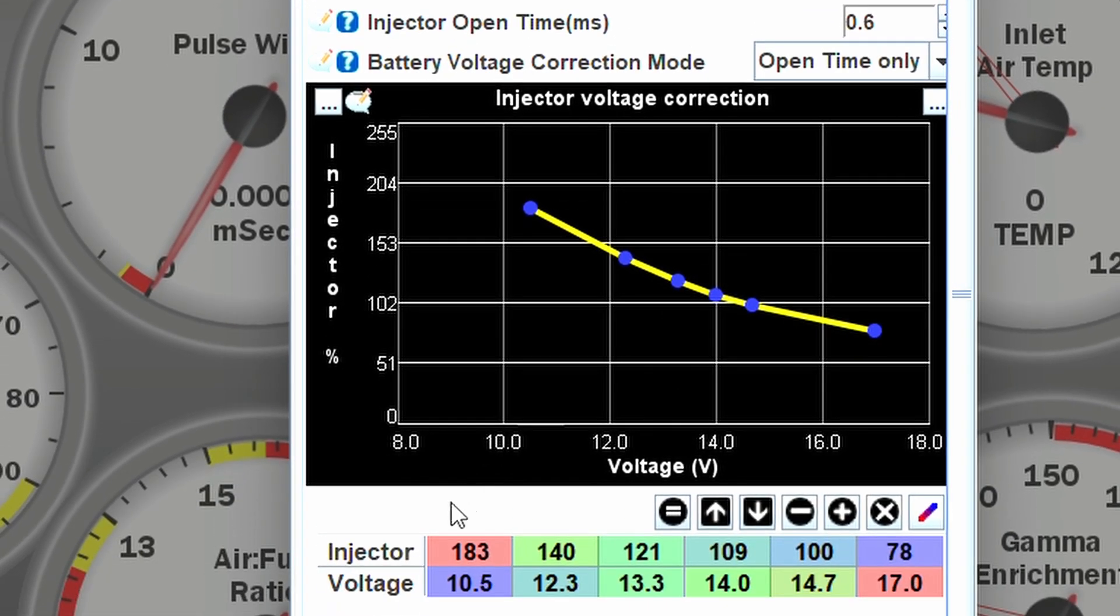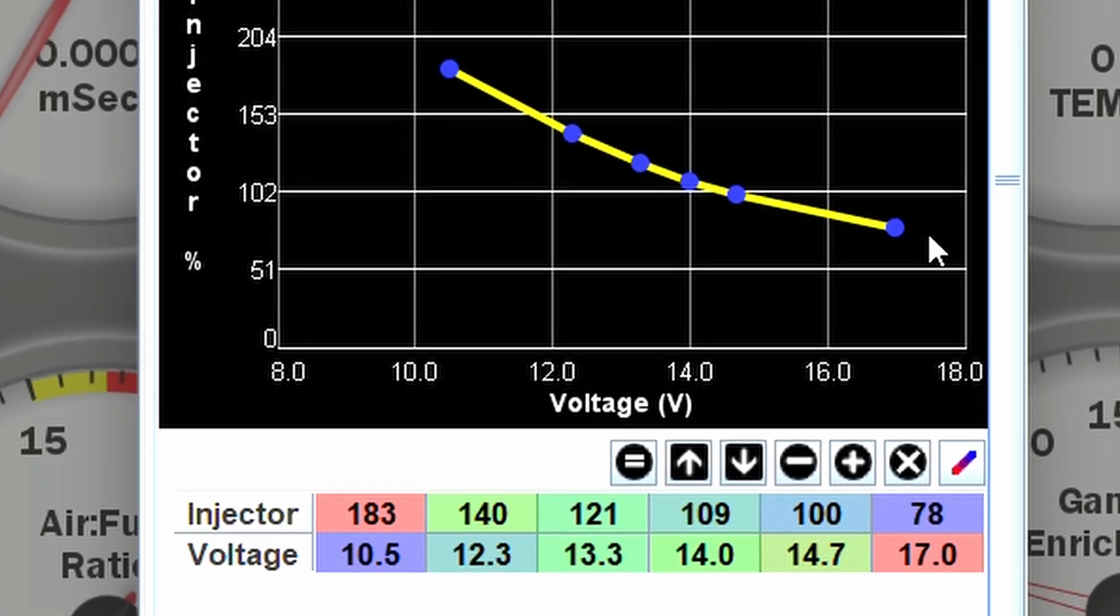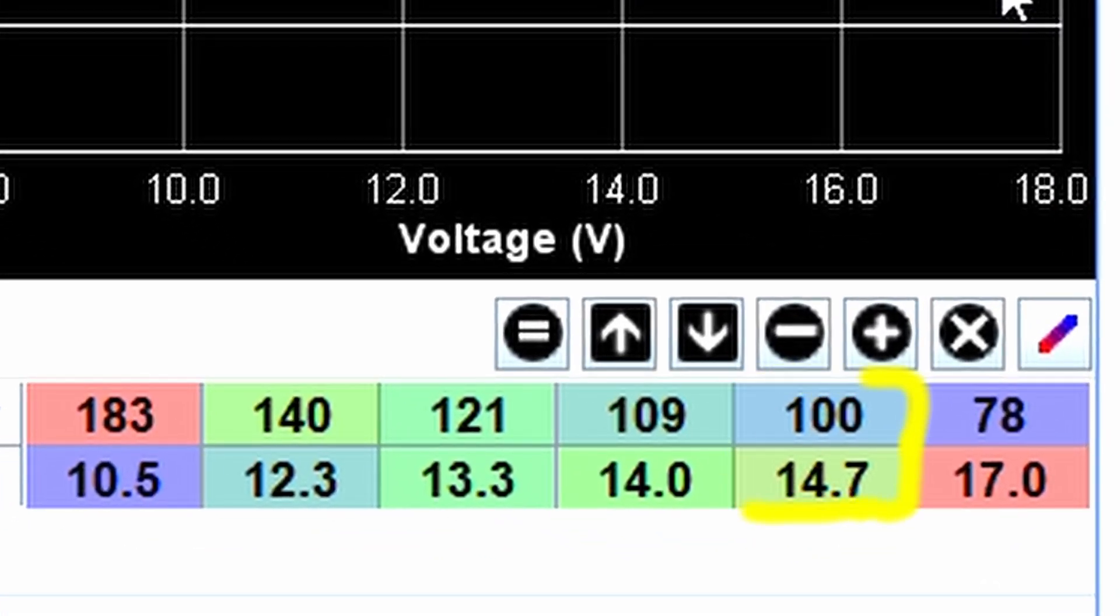Then, you'll see this graph, which will take that baseline and use it at essentially different percentages at different battery voltages. As you can see here, 100% for me is at 14.7 volts, because at 14.7 volts, my open time is exactly 0.6 milliseconds, which is my baseline.